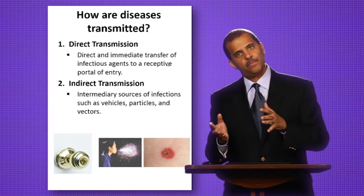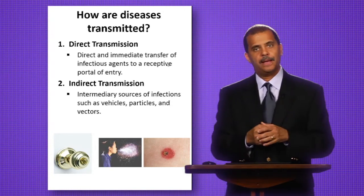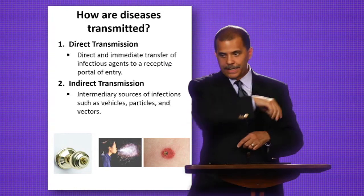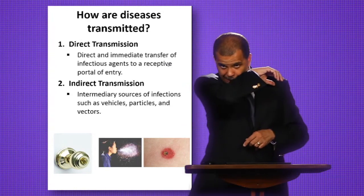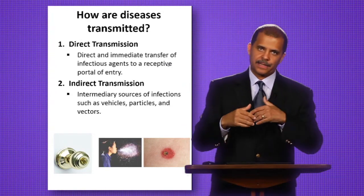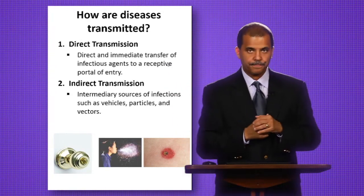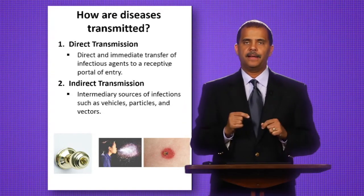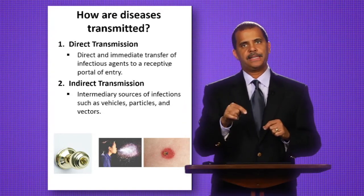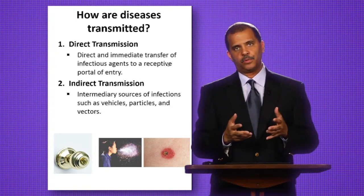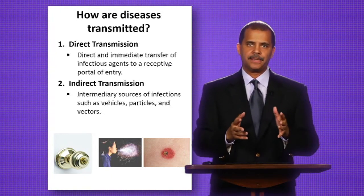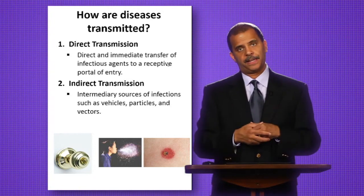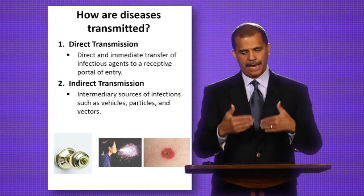So now what people are doing with regard to coughing — people used to cover their mouths like this, but increasingly people are going like that, as a way to kind of reduce the spread. And that next image is an image of a tick lodged in the skin of an individual — if you think about Lyme disease. So these are all different ways that people can become infected directly and indirectly.